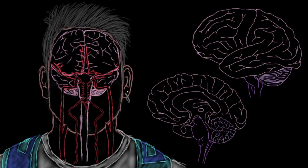The cerebrum is primarily supplied by the anterior cerebral artery, the middle cerebral artery, and the posterior cerebral artery. Let's draw out, on the surface of these brains, their supply areas and their vascular territories.